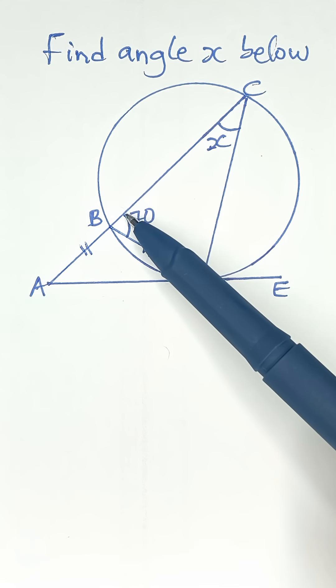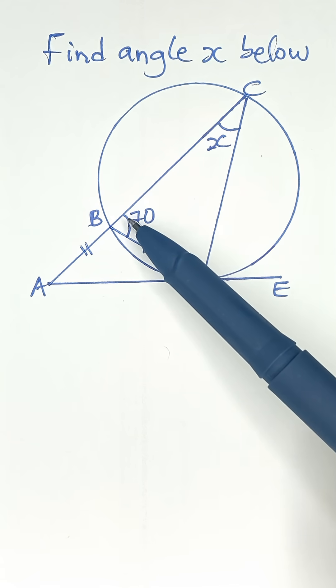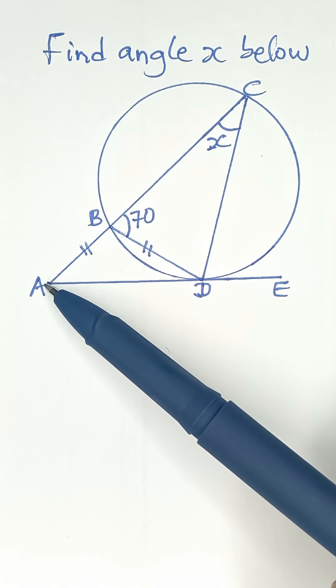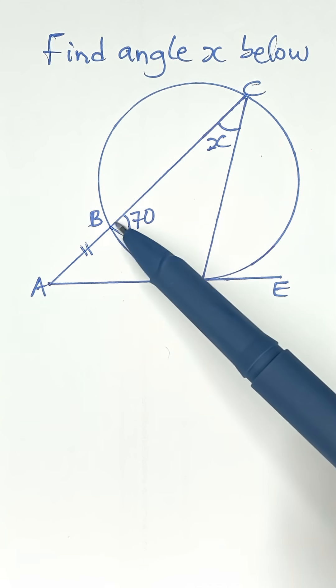This 70-degree angle is an exterior angle of triangle ABD because a line is extended outwards. There's a theorem that says the exterior angle of a triangle equals the sum of the two opposite interior angles.